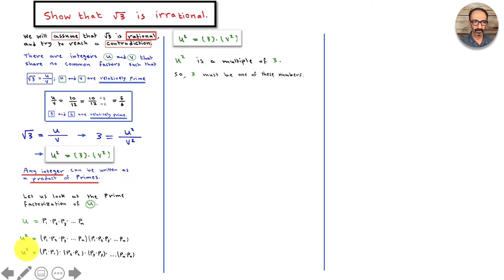u squared is written this way, but it's a multiple of 3, so 3 must be one of these numbers. If 3 is p1, just for simplicity, then u squared equals 3 times 3 times p2 times p2 times p3 times p3, all the way to pn times pn.